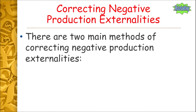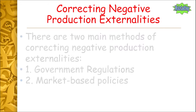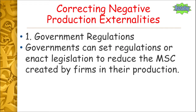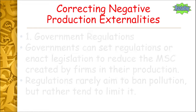There are two main methods of correcting negative production externalities: number one, government regulations, and number two, market-based policies. Starting with government regulations — the government can set regulations or rules, or enact legislation, to reduce the marginal social cost created by firms in their production.